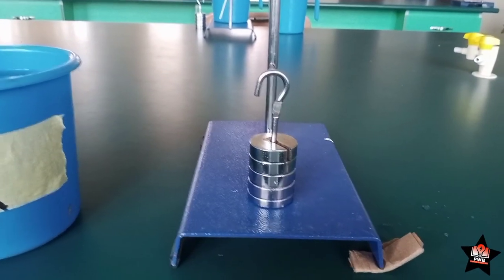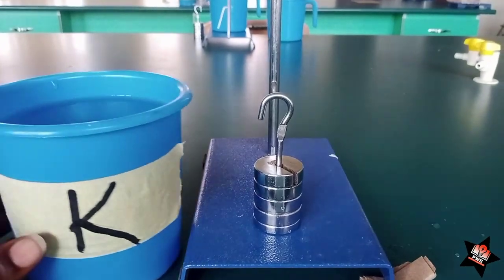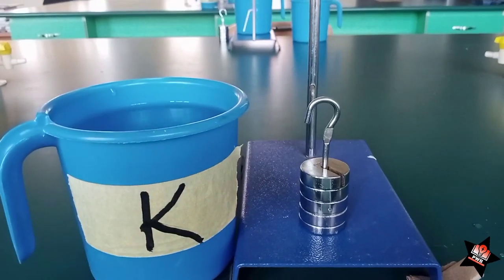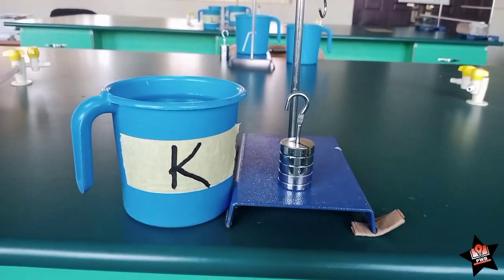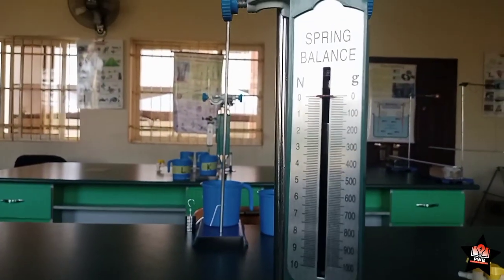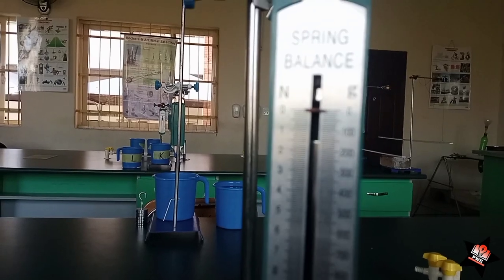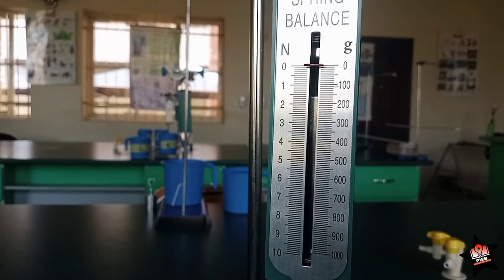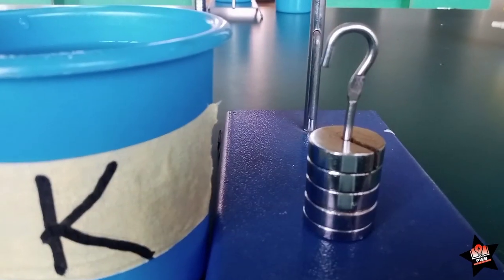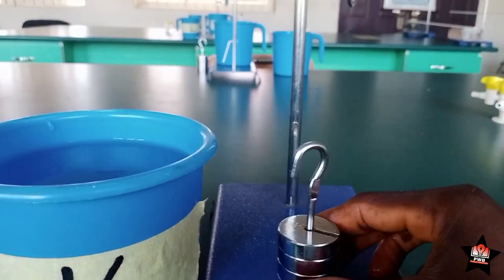What this principle is trying to explain is that objects are lighter in liquid than in air. And this is not magic, it is true. You are going to see it right now. So, this is our spiral spring. It is on 0 Newton, 0 grams. So, I'm going to slot this right here and you will see what I'm talking about.